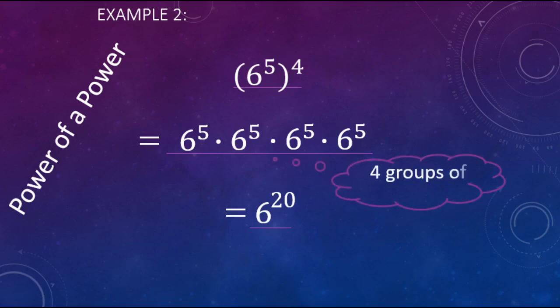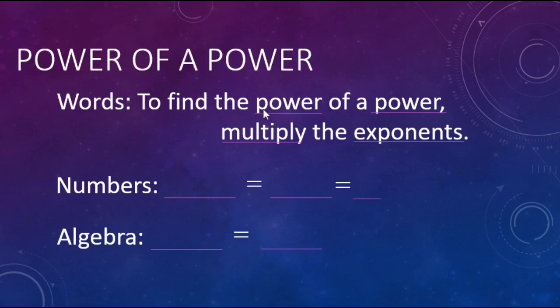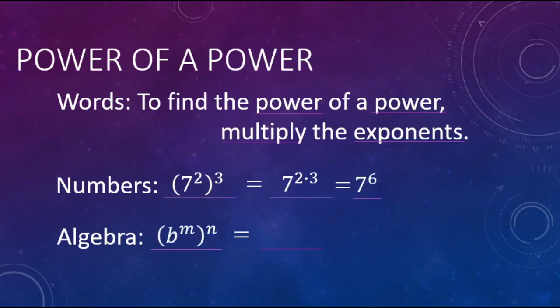When we think about this, we have 4 groups of 6 to the 5th, or 5 sixes. So when we do a power to a power, we are going to be multiplying the exponents. In words: to find the power of a power, you multiply the exponents. For numbers, 7 squared to the 3rd power is 7 to the 2 times 3 power, which is 7 to the 6th power. For algebra, b to the m to the n equals b to the mn power, or m times n power.